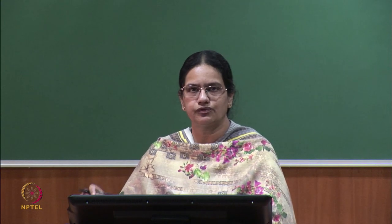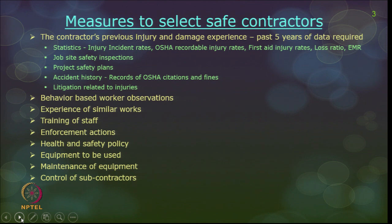During the bidding stage itself, you can evaluate or assess a contractor whether he will execute a project safely. Some metrics you can collect from a contractor for the last 5 years of work experience are: injury incident rates or recordable injury rates, first aid injury cases, and loss ratio or experience modification ratio. You can collect this data from previous projects — maybe for the past 5 years — based on your project sensitivity and seriousness on safety.